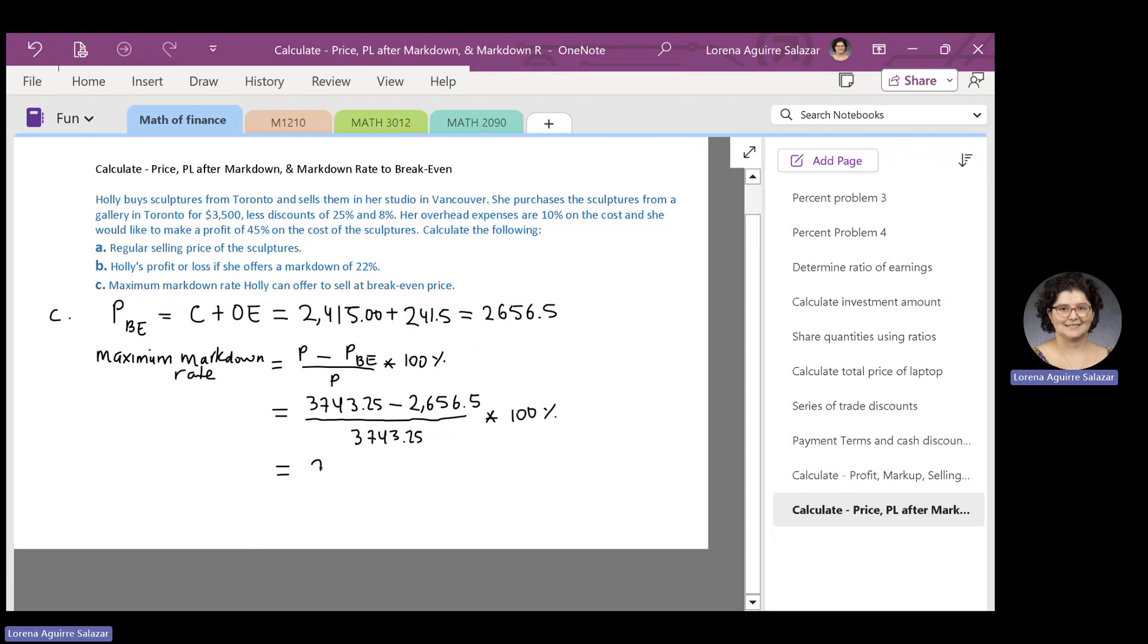225, 806, etc., which can be rounded off to 29.03 percent. So, the maximum markdown rate that Hoed can offer is about 29.03 percent. And that's all for this problem.